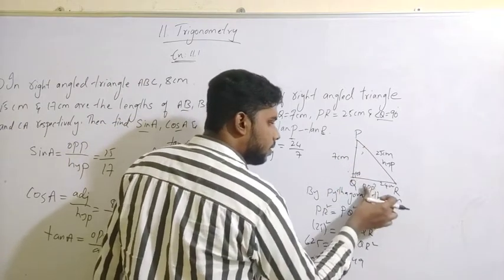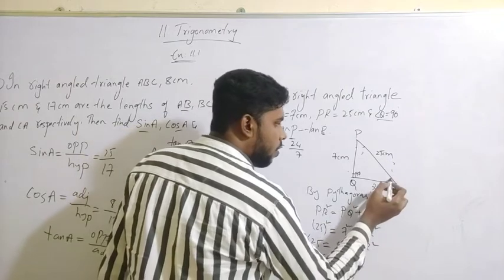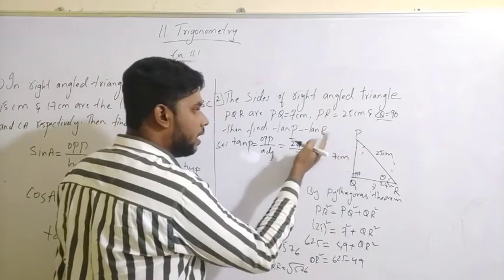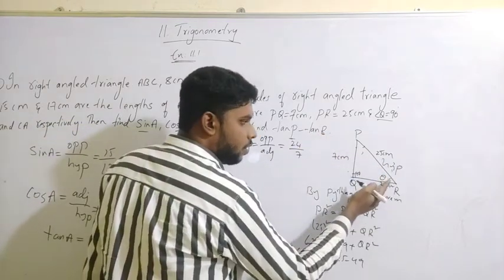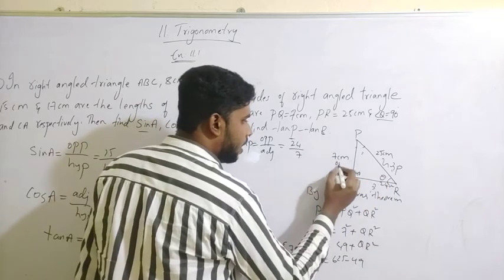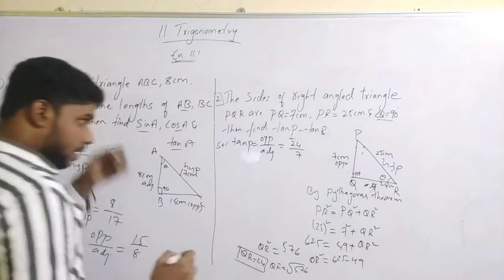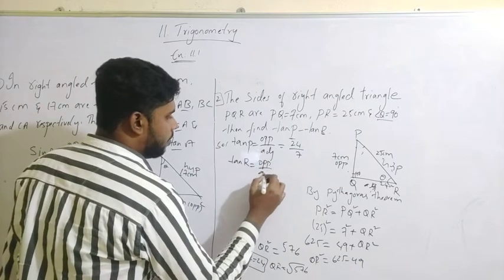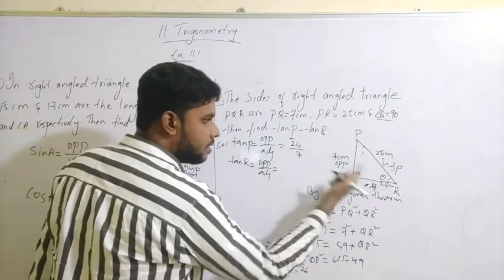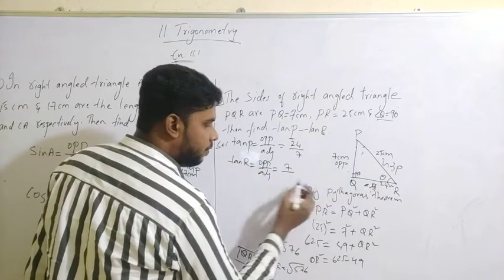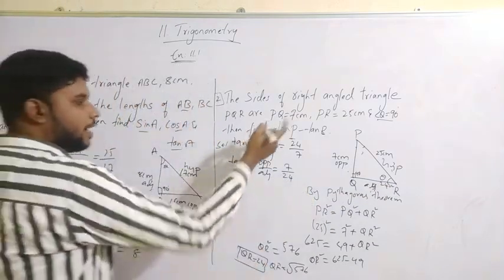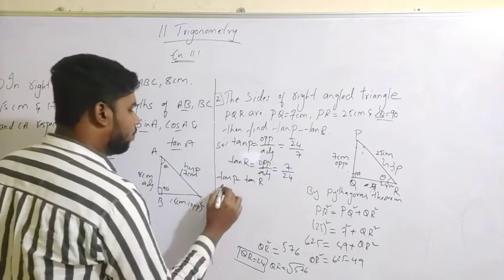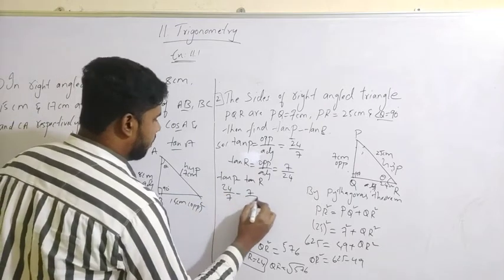Now finding tan R. This is the opposite side and this is the adjacent side for angle R. Tan R uses the same formula: opposite by adjacent. In this case the opposite side is 7 and the adjacent side is 24, so tan R equals 7 by 24. Now we can find tan P minus tan R: that is 24 by 7 minus 7 by 24.